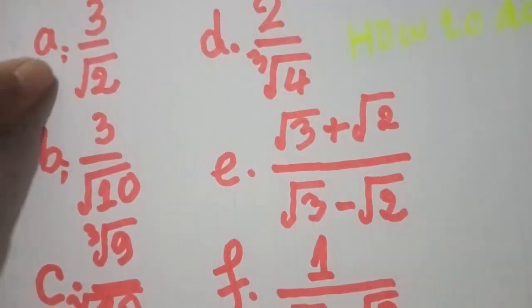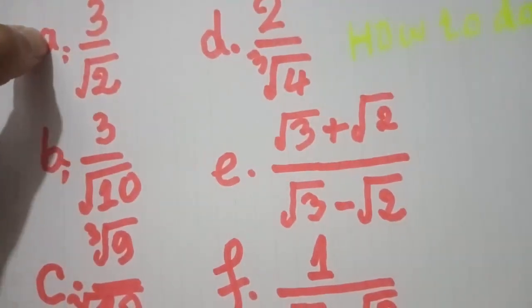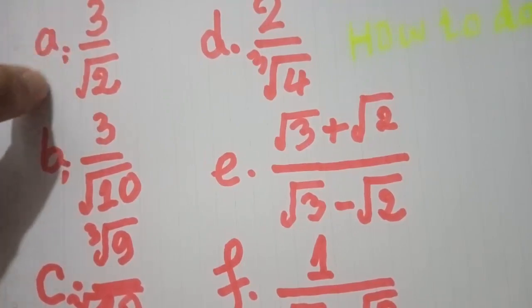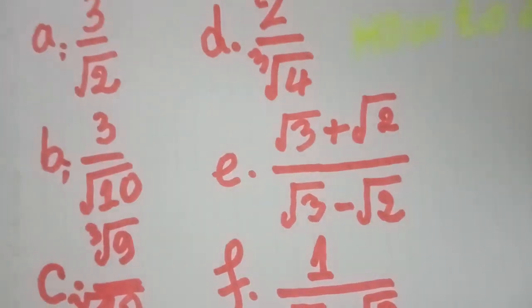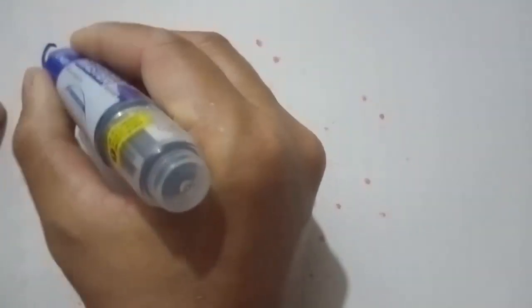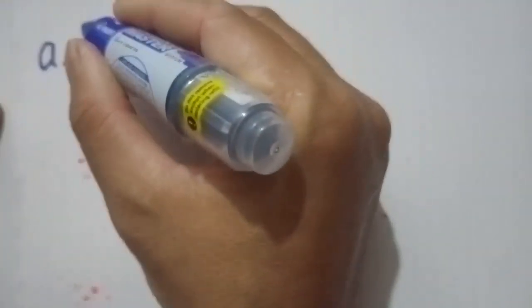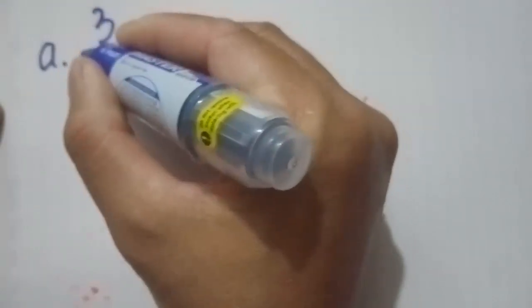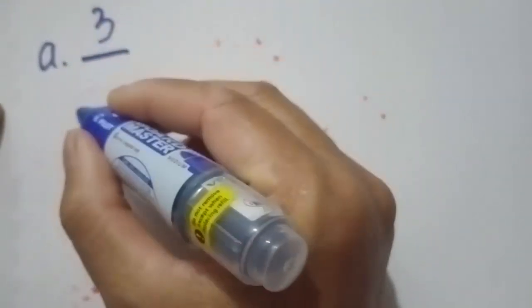Start to see. So now we do problem A. So now, ok, let's see A, ready? We have 3 over radical 2. Ok.